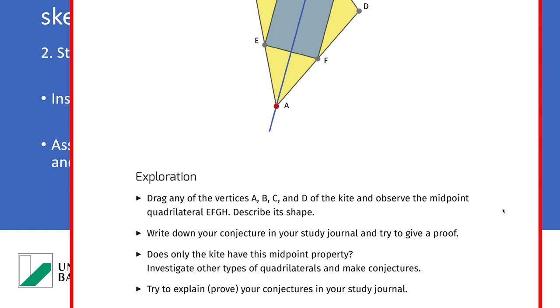And then they should try to give a proof. So they first constructed this kite. Then they experiment with this kite. And the idea is they should write down their observations and then they should give a proof. So they go deeply into this topic, the quadrilateral of a kite.